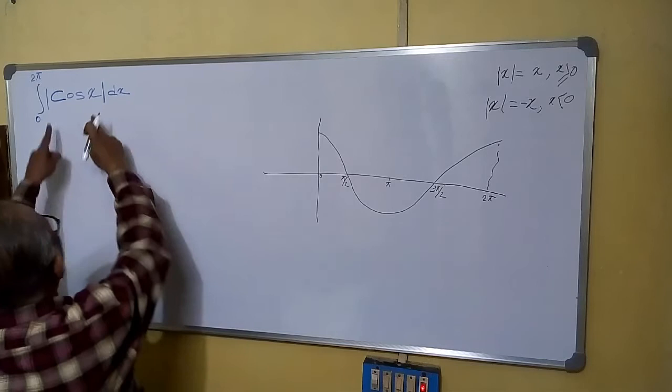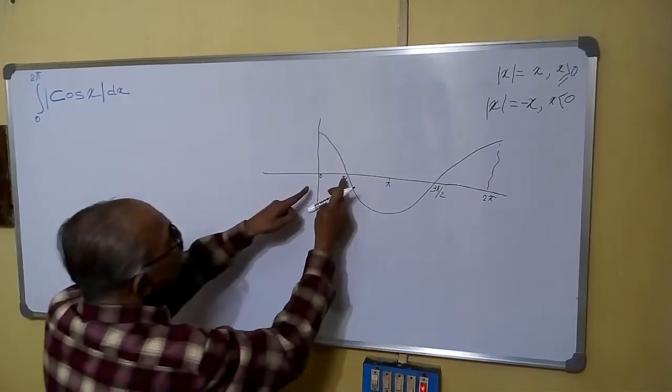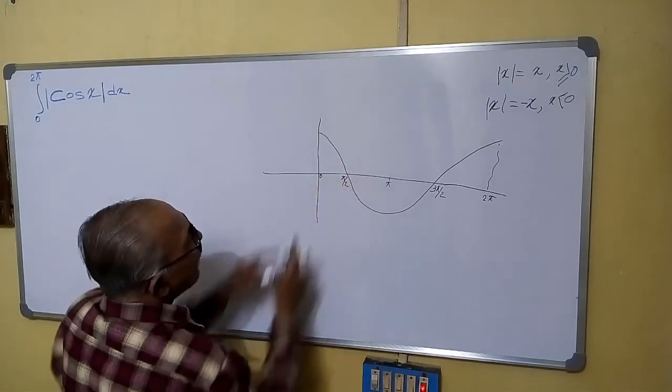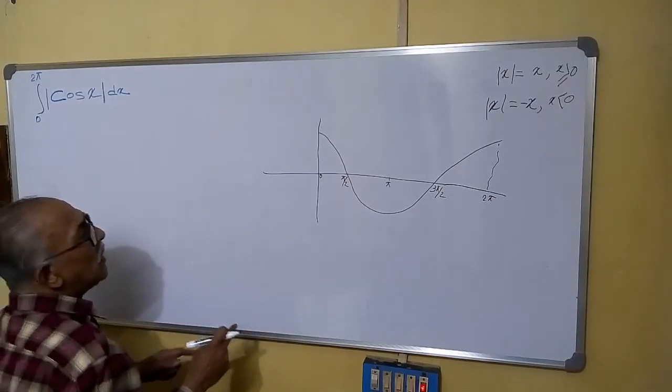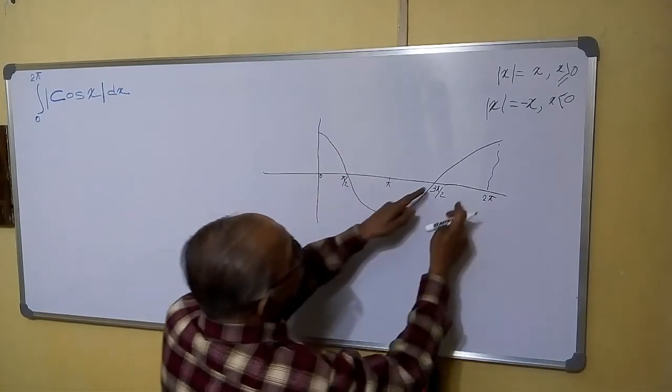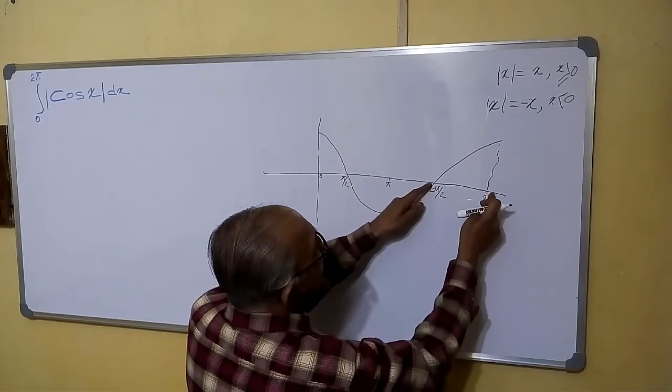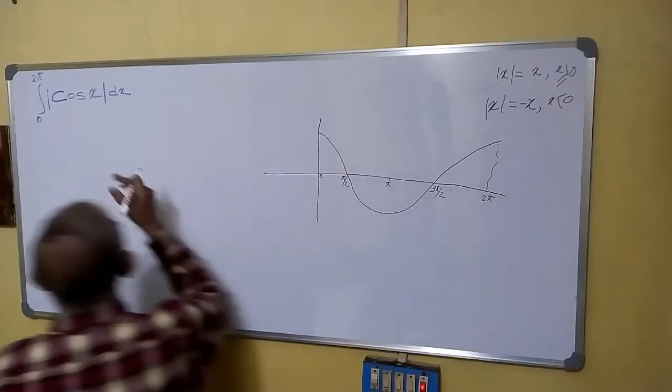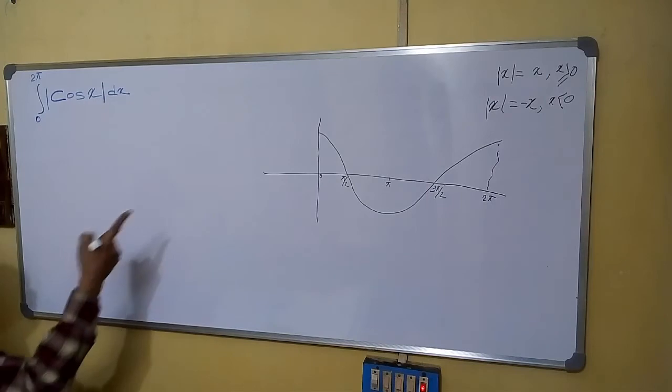So, cos x, what is inside mod, that is positive between 0 and pi by 2, again negative between pi by 2 and 3 pi by 2, again positive between 3 pi by 2 and 2 pi. So, we have to break this function in 3 phases.